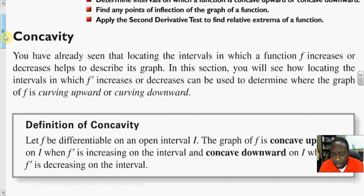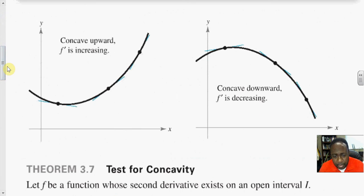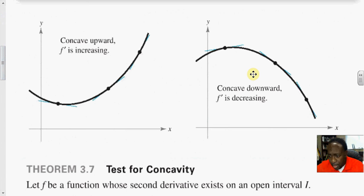Concavity denotes the curvature of a function on a particular interval. Let f be a differentiable function on some open interval i. The graph of f is said to concave upward on i when f prime is increasing on the interval, and the function concaves downward on i when f prime is decreasing on the interval. I think of concavity as a cup — if the concavity is upward, the cup is sitting upward; if the concavity is downward, the cup is upside down.